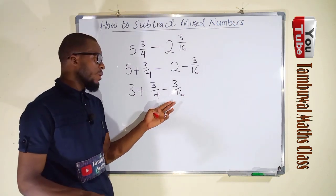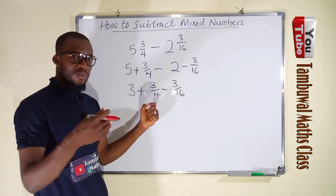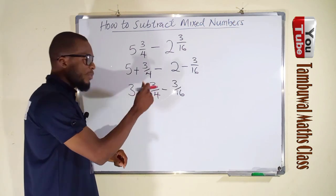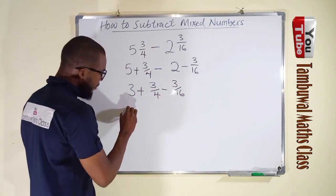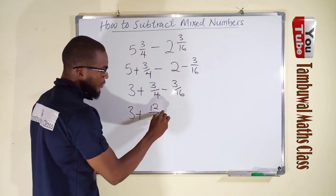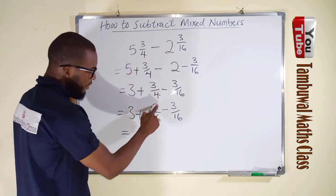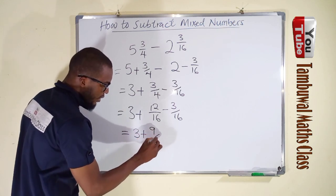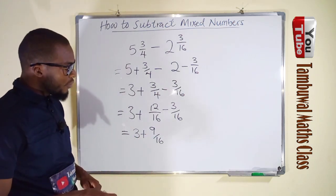We subtract whole numbers and fractions separately: 5 minus 2 is 3. For the fractions 3/4 minus 3/16, they have different denominators, so we find the LCM, which is 16 — the smallest number both 4 and 16 divide into without remainder. We multiply 3/4 top and bottom by 4 to get 12/16, giving us 3 plus (12/16 minus 3/16). Since the denominators match, 12 minus 3 is 9, so we have 3 plus 9/16.